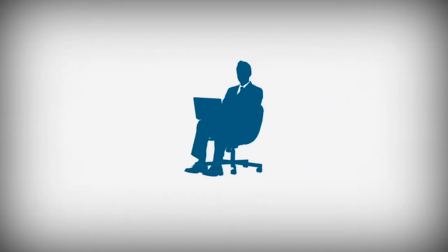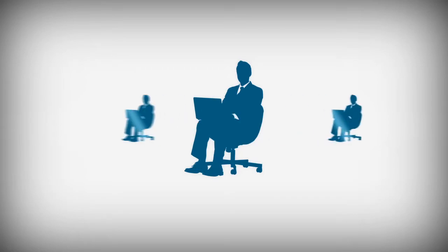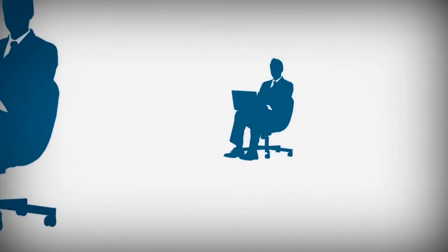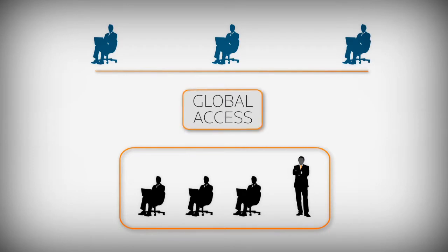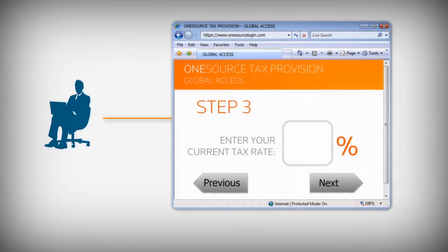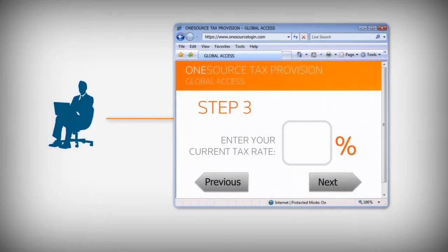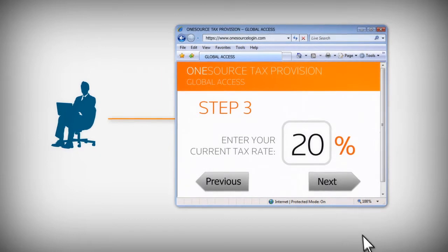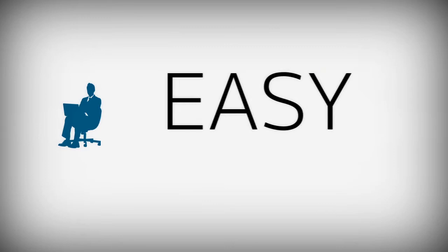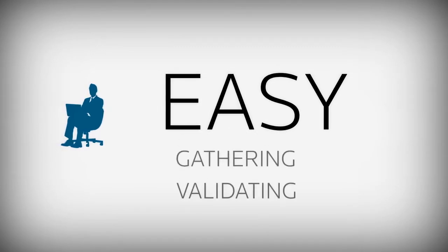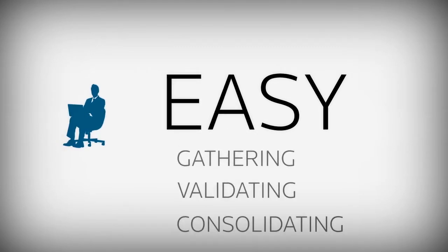Of course, you'll also have to collect data from people — people outside your department, from other offices, even other countries — from tax and non-tax professionals who make submissions without having to know tax. That's where OneSource Tax Provisions Global Access comes in. Global Access is an intuitive data entry system designed to make it easy for professionals around the world to enter and sign off on local tax provision data using a simple web interface. Controlling the process of gathering, validating, and consolidating data from a broad spectrum of users is easier than ever before.